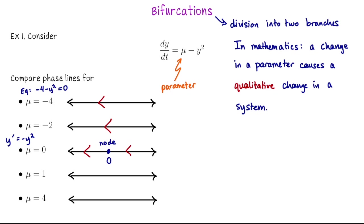Let's see what happens now if I increase mu from zero to one. In this case, we're looking at y prime equals one minus y squared. We're going to see a shift in the qualitative description — it's going to go from having one equilibrium solution to having two. The two equilibrium solutions are located at plus and minus one. If y is smaller than negative one or greater than one, y prime is negative. If y is between negative one and one, y prime is positive. So as we increase from mu equals zero to mu equals one, we went from one equilibrium solution to two, and our node split into a source and a sink.